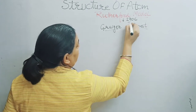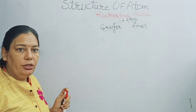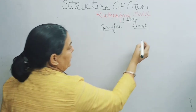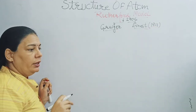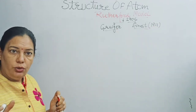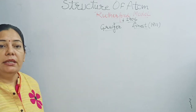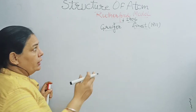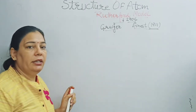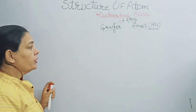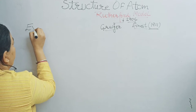In 1911, Rutherford repeated this experiment with the help of two students — Geiger and Marsden. He repeated and proved the experiment again in 1911. So the model we study is based on the 1911 experiment. Let us now start with the experiment performed by Rutherford.